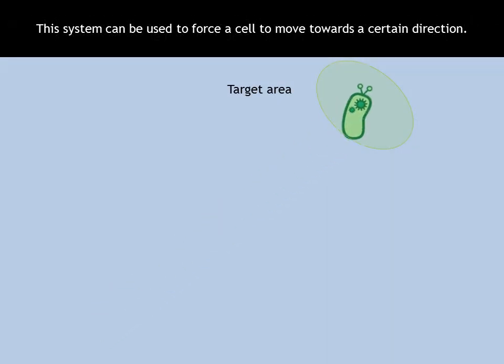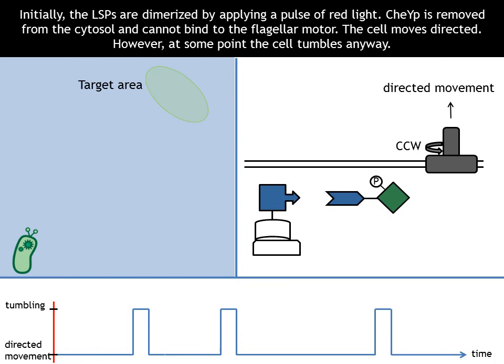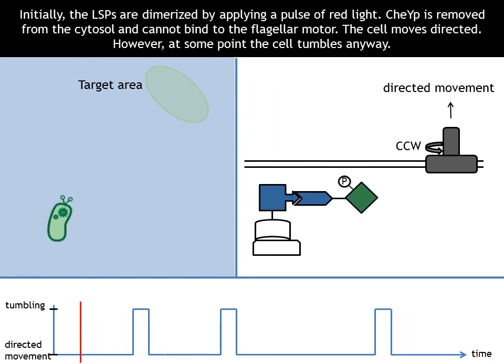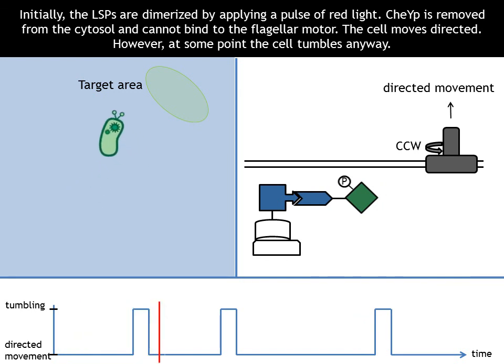This system can be used to force a cell to move towards a certain direction. Initially, the light-sensitive proteins are dimerized by applying a pulse of red light. CheYP is removed from the cytosol and cannot bind to the flagellar motor anymore. The cell moves directed.